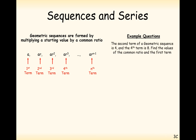Another brain teaser: the second term of a geometric sequence is 4, and the fourth term is 8. Find the common ratio and the first term. The second term is A times R, which equals 4. And the fourth term, which is A times R to the power of 3, is equal to 8.